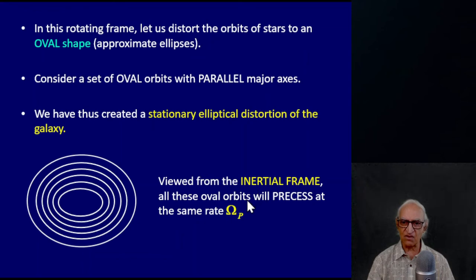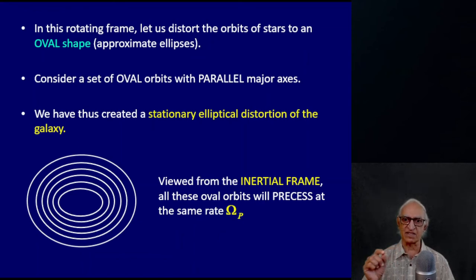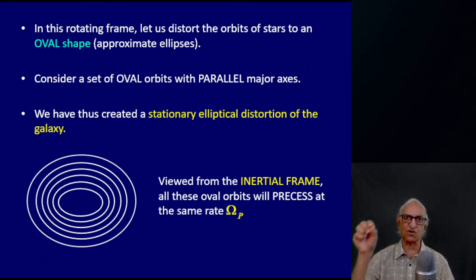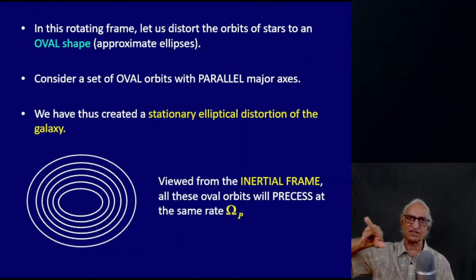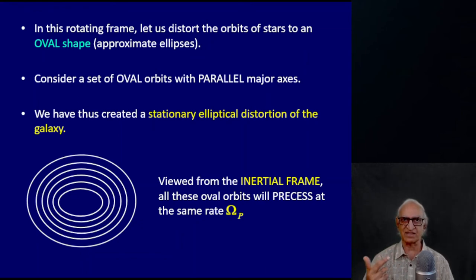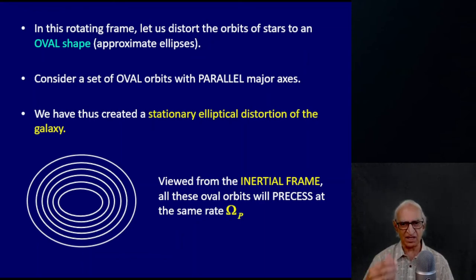We have thus created a stationary elliptical distortion of the galaxy in the rotating frame. Now let us jump from the rotating frame back to the inertial frame. In the inertial frame, all these oval orbits will precess at the rate omega_p — all of them will precess at the same rate. The major axis of the oval will change its orientation; another way of saying that is the oval will precess. So all the ovals will precess at the same angular velocity omega_p because I have created such an artificial distortion.